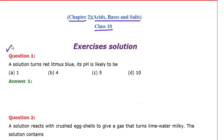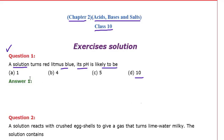Let's see question number one. A solution turns red litmus paper into blue — its pH is likely to be. This is a multiple choice question with four options. When red litmus turns blue, the solution is basic, and we know the pH value of a basic solution is greater than 7.